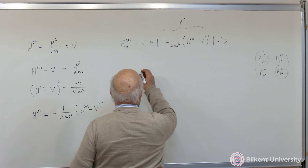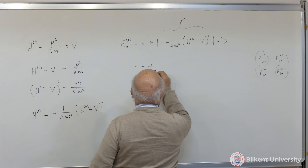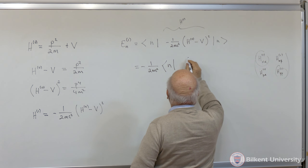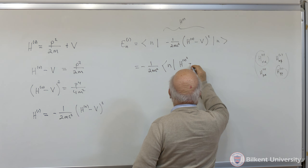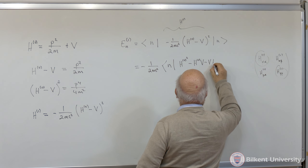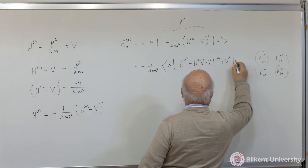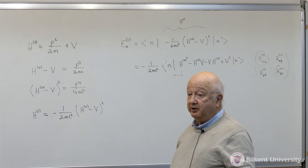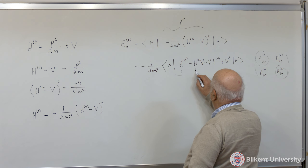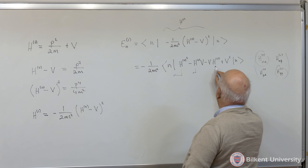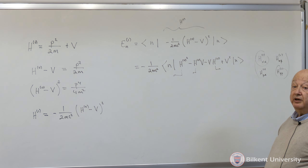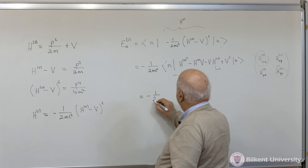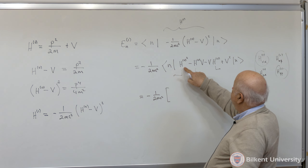That's what allows me to just use non-degenerate perturbation theory, which really means I'm looking at the diagonal elements because the matrix is already diagonal. So now I expand this. I'm going to get minus 1 over 2mc squared, and inside I have a bunch of terms: H0 squared minus H0 V minus V H0 plus V squared, all taken between the nth state.